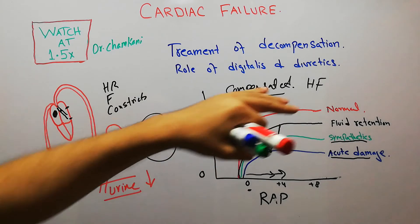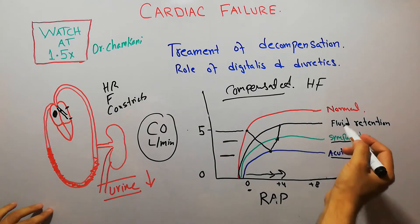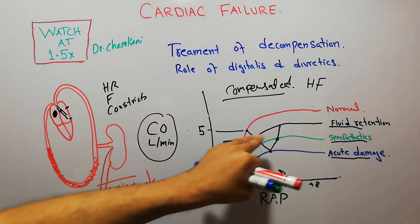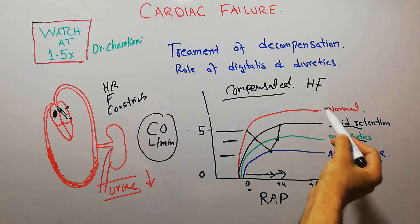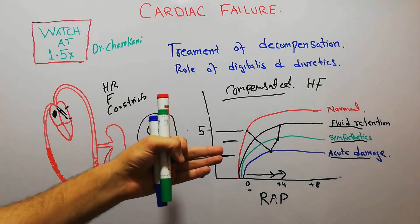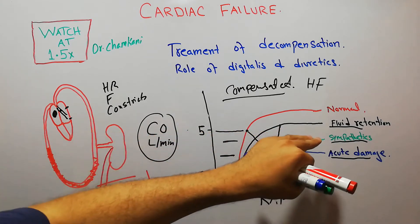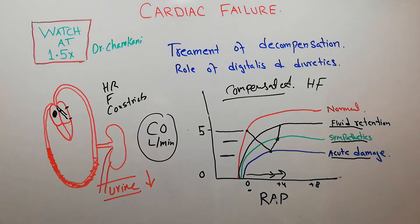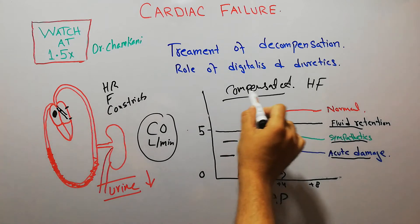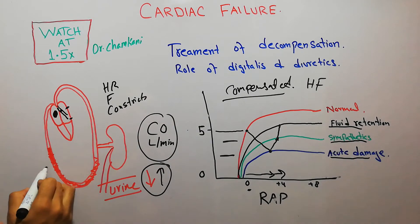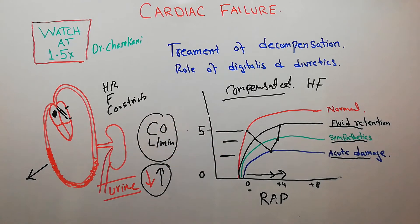The sympathetic system and fluid retention have helped bring the cardiac output back towards its normal level. Although it has been brought back to around five liters per minute, there is still some damage to the heart. If the patient is not exerting, this cardiac output will be sufficient, but during exercise there is decreased cardiac reserve. Slowly the urine output will increase, fluid retention will decrease, and the patient may return to normal life. This is known as compensated heart failure.